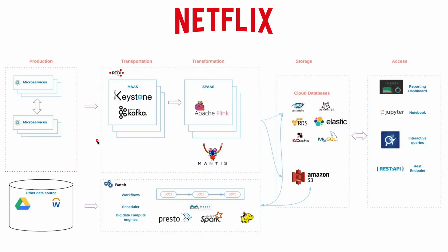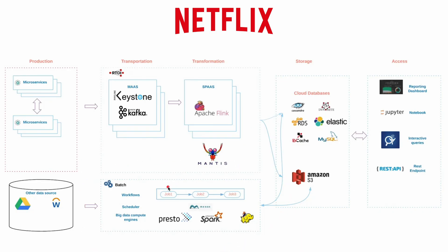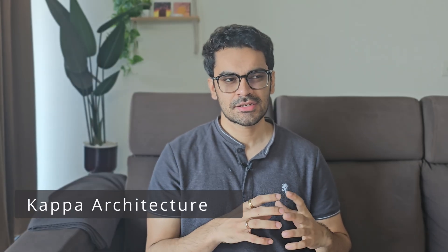A real-world example is Netflix: one data store powers overnight aggregated insights while real-time pipelines adjust recommendations as you watch. There are many data sources — some go through Apache Kafka and Apache Flink for the real-time component, and many also go through a batch pipeline supported on Spark. Eventually they use different storage like Cassandra, RDS, and S3 depending on the freshness of data.